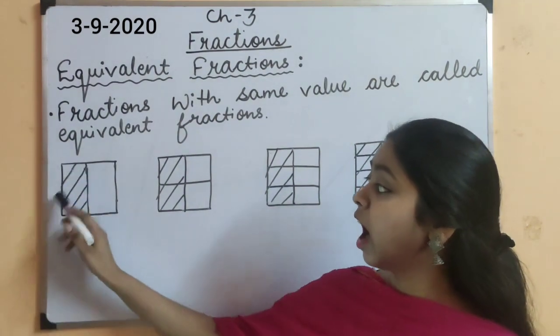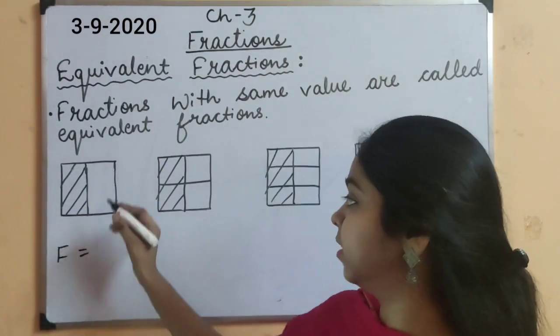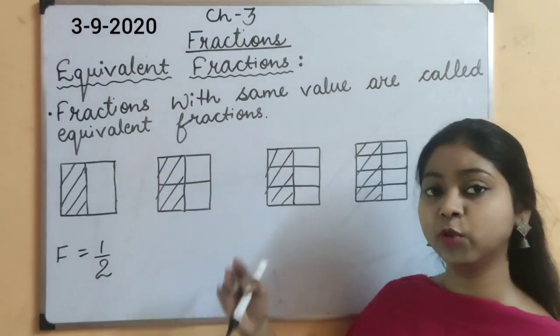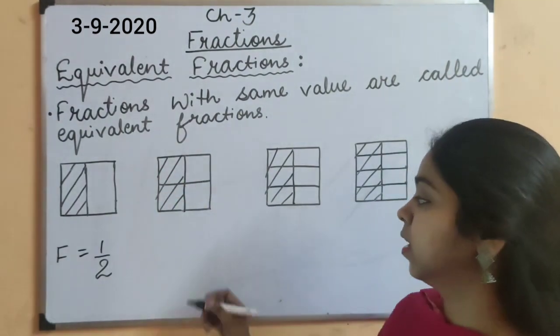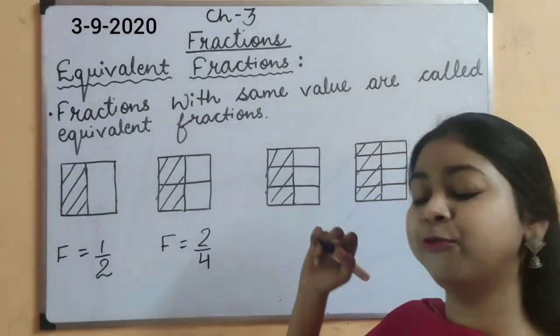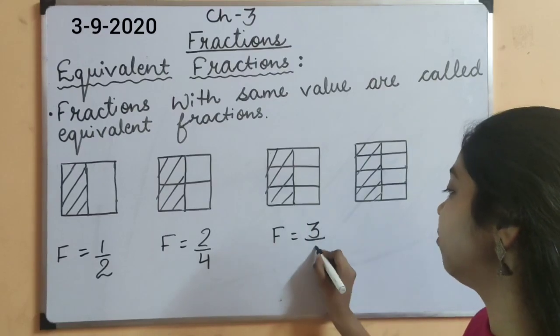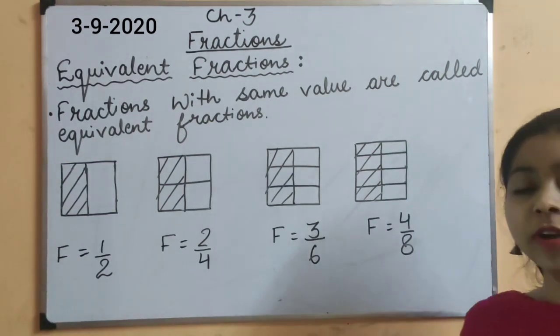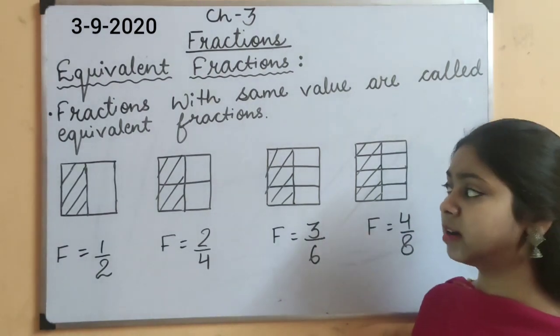The child has taken half part of the chocolate. So, what will be the fraction for this shaded part? It is 1 out of 2 equal parts. This child has divided the chocolate into 4 equal parts and the child has taken 2 parts. So, the fraction for this shaded part is 2 out of 4. And here, the fraction for the shaded part is 3 out of 6. And here, the fraction is 4 out of 8.